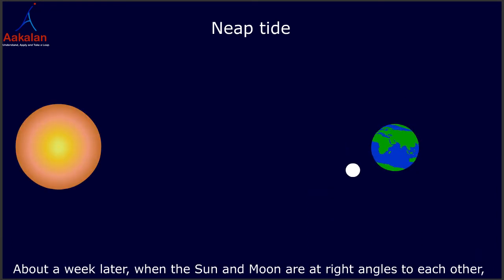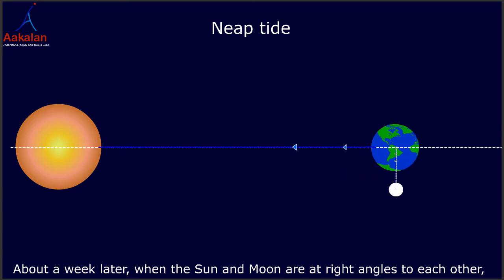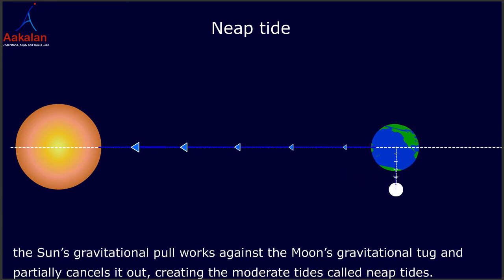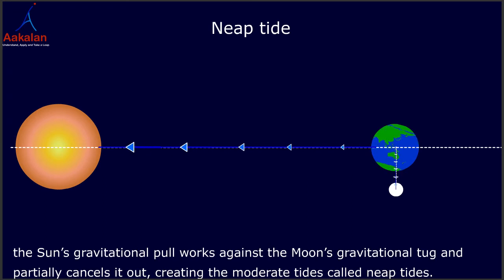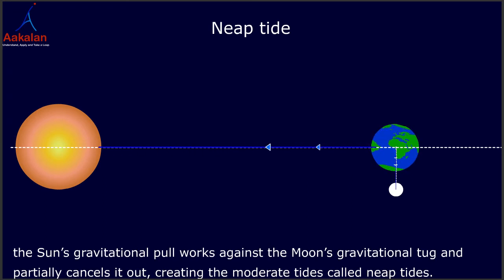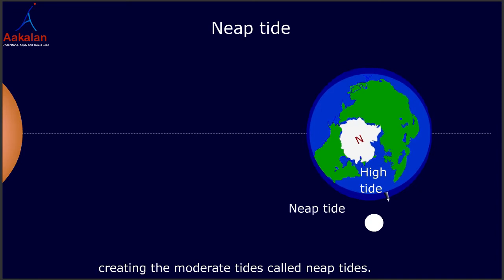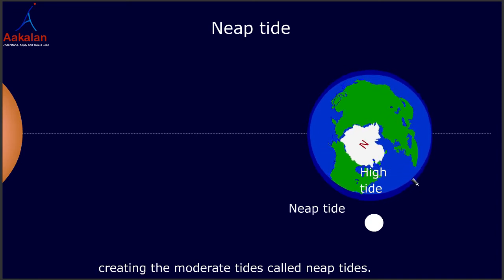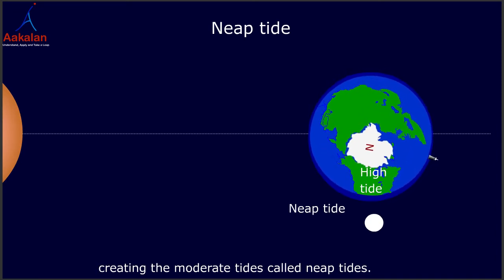About a week later, when the Sun and Moon are at right angles to each other, the Sun's gravitational pull works against the Moon's gravitational tug and partially cancels it out, creating the moderate tides called neap tides.